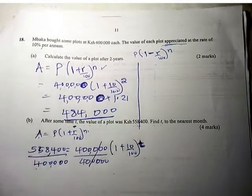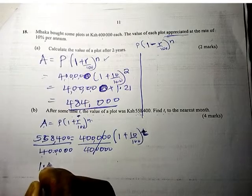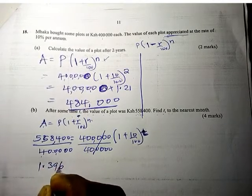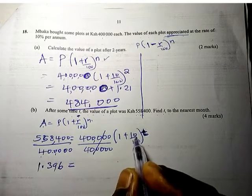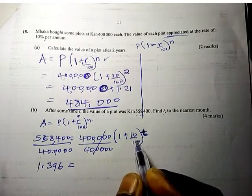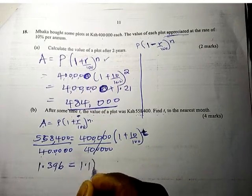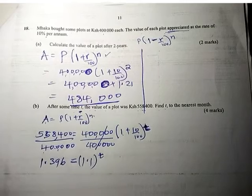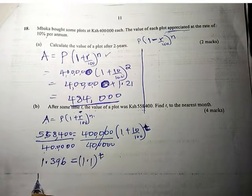This divided by 400,000 will give us 1.396 equals 1.1 raised to power t.